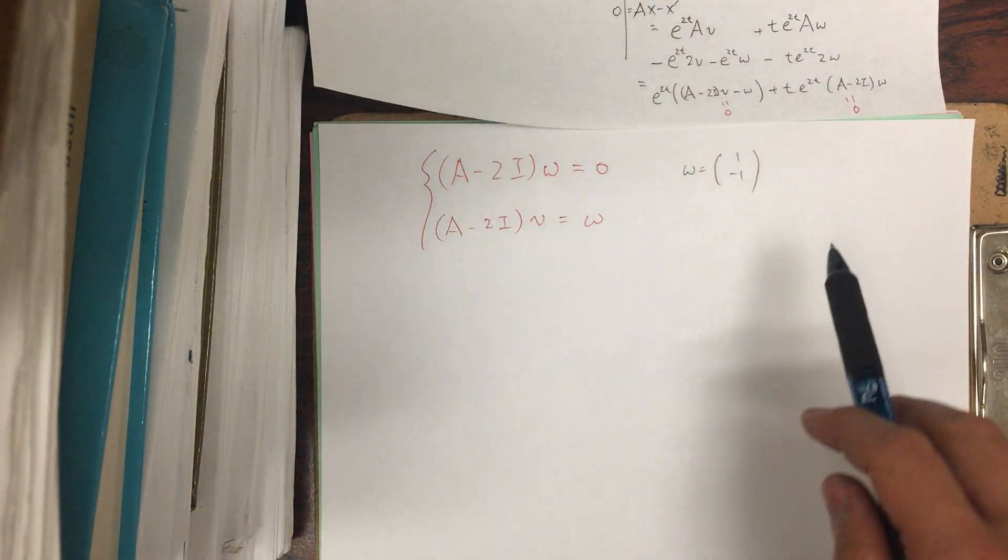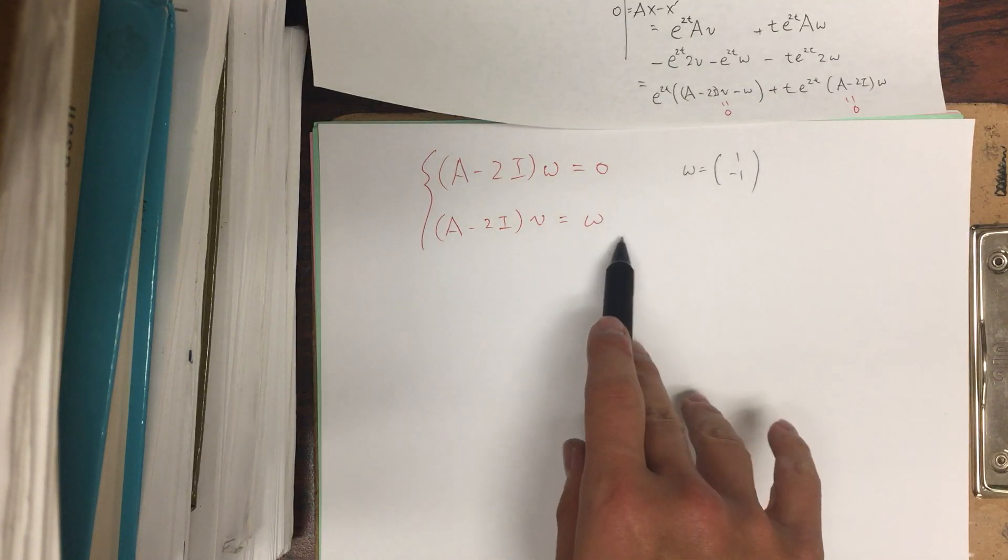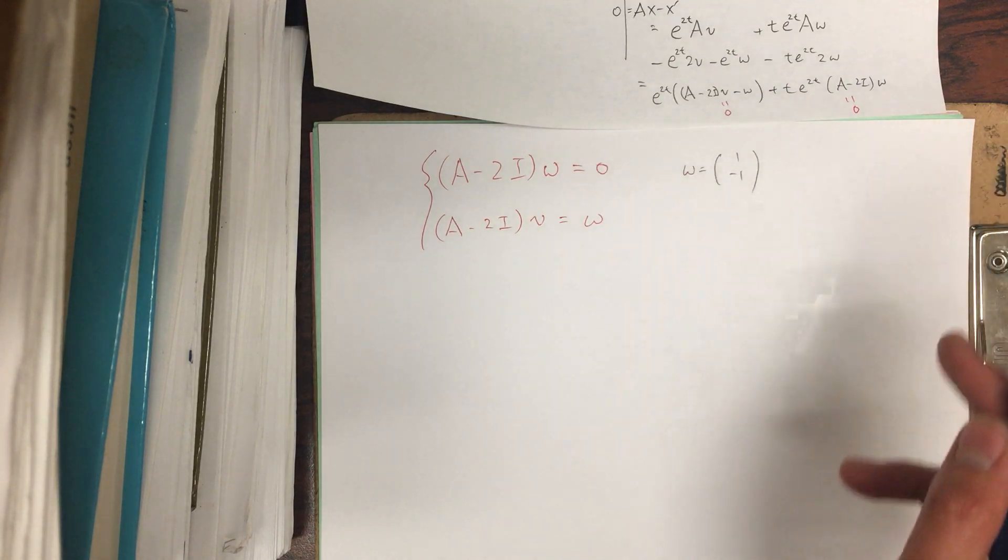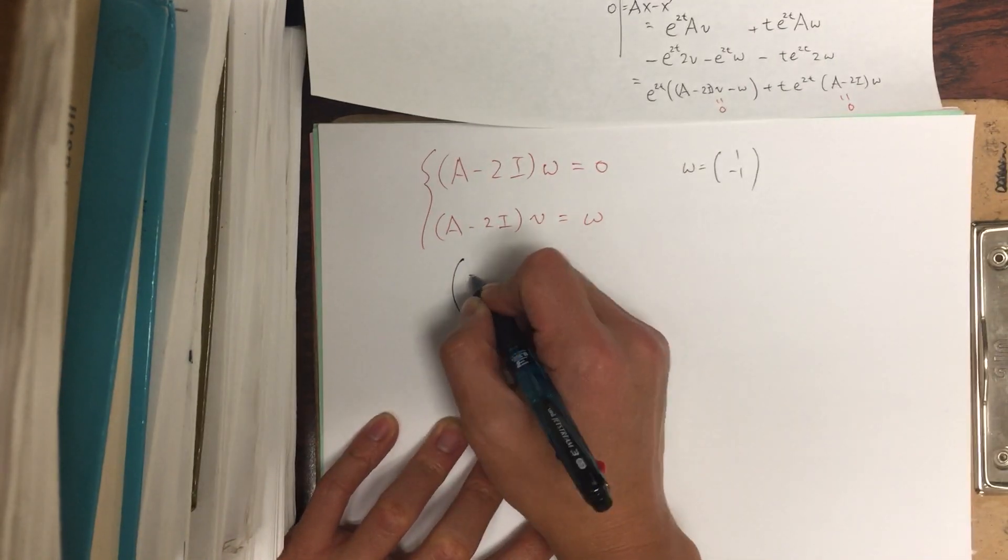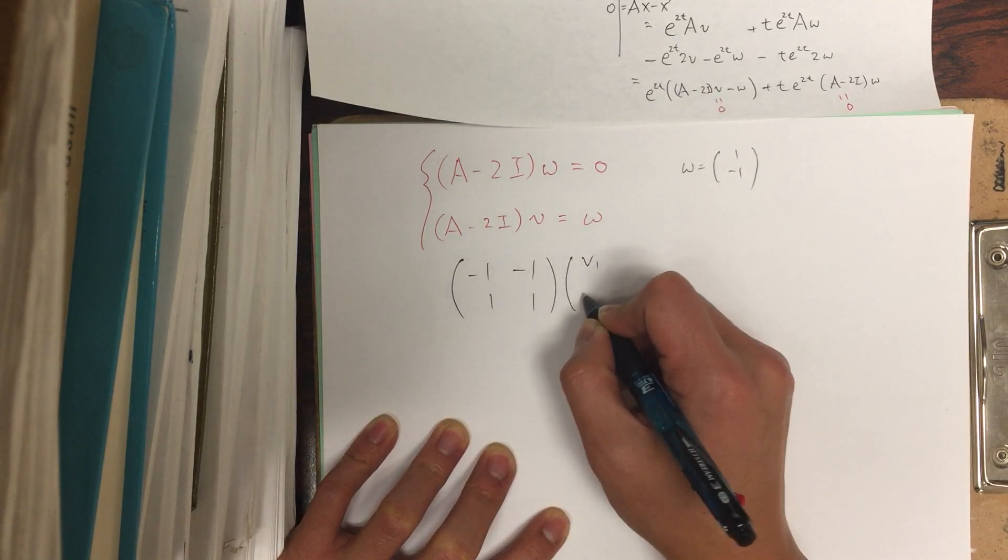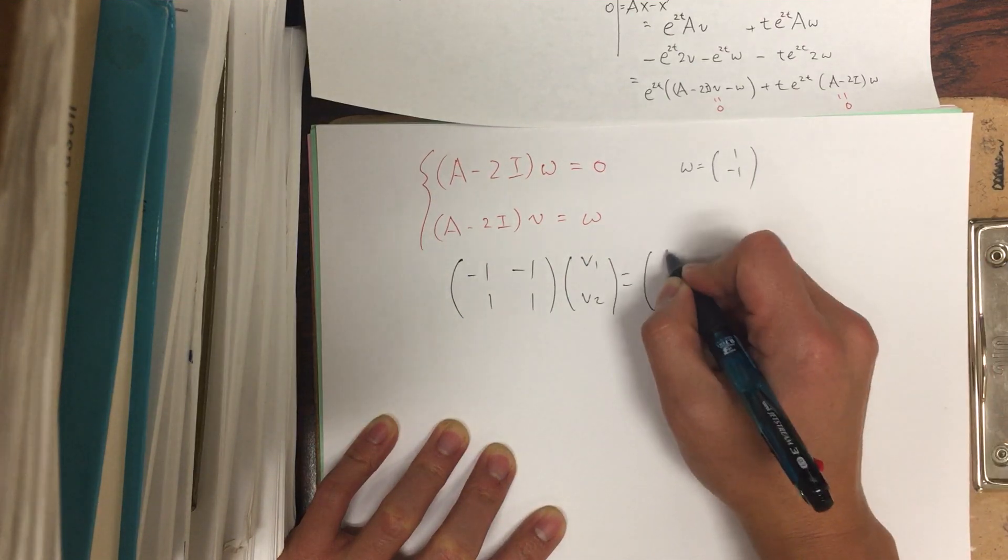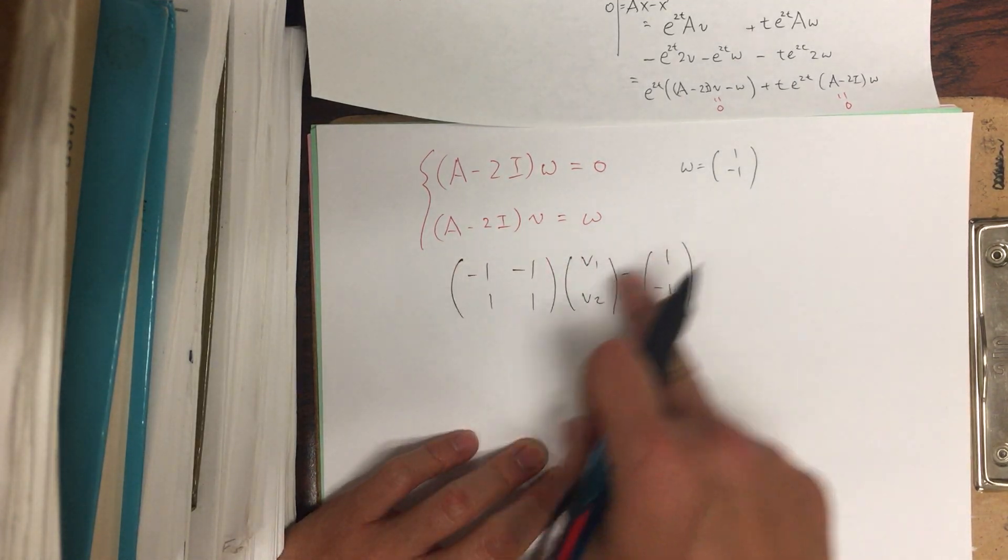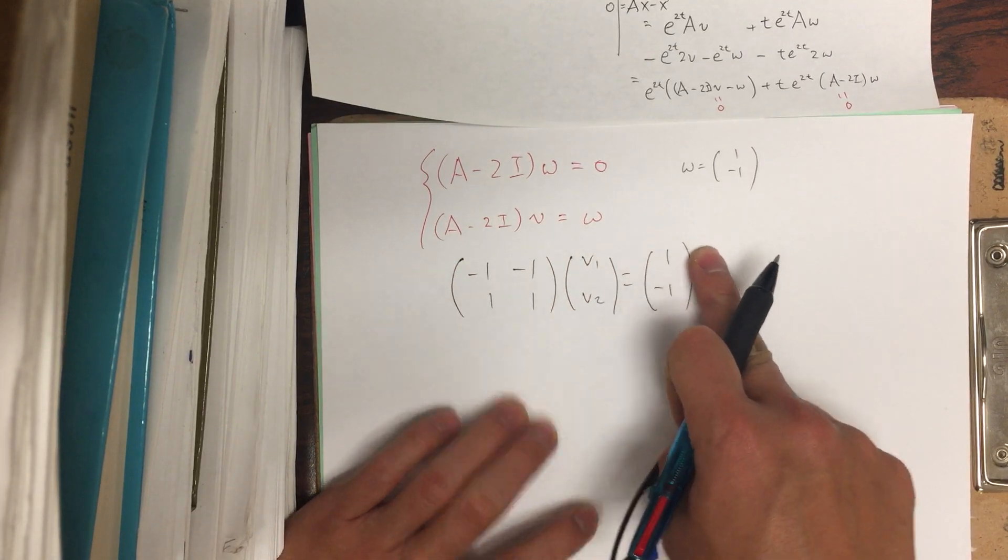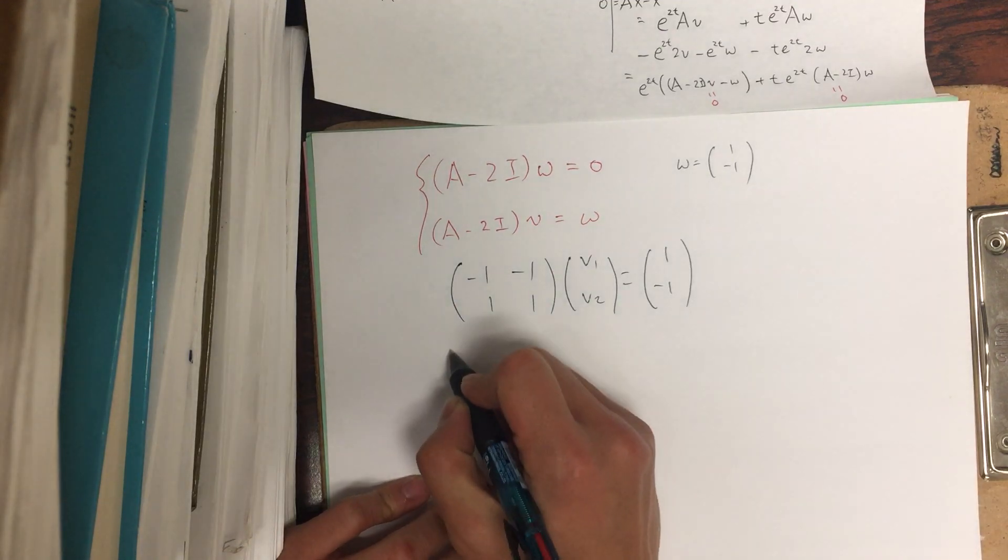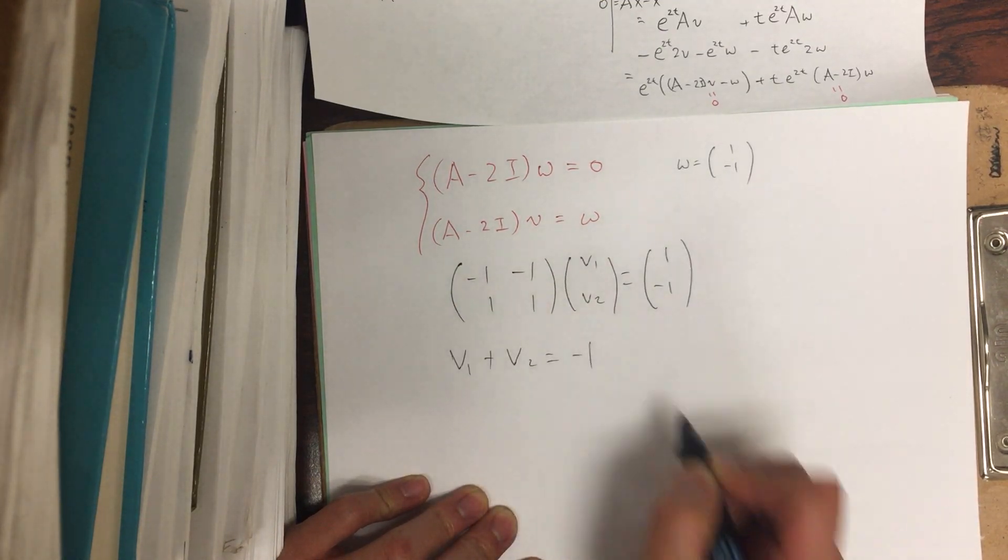And then, instead of solving the eigenvalue equation, setting this to be zero, we set this to be w. Okay. And so this is just solving for [-1, -1; 1, 1] and [v1, v2] equals, instead of [0, 0], we set it as [1, -1]. Okay. And so now again, this whole row is just negative 1 times this. And so this is secretly just one equation. So this is v1 + v2 equals -1.